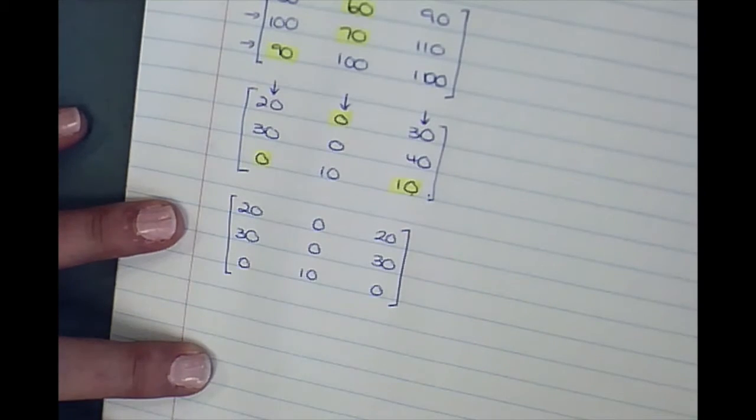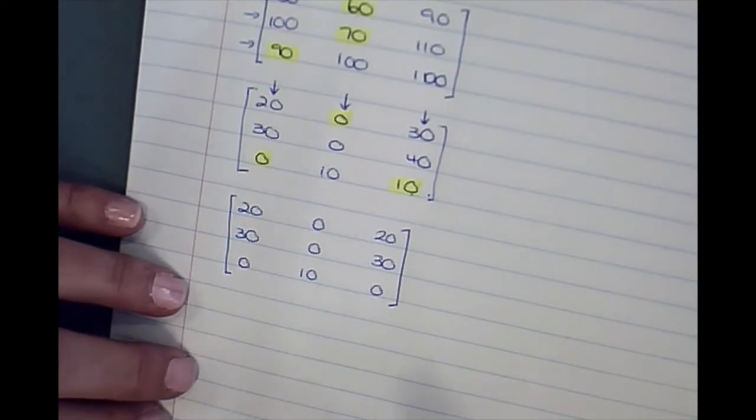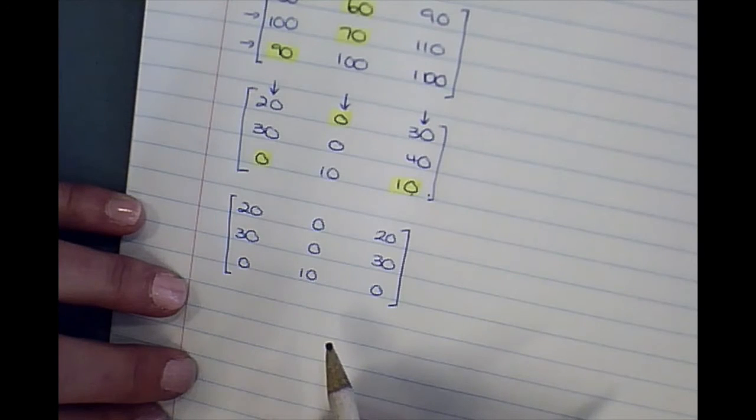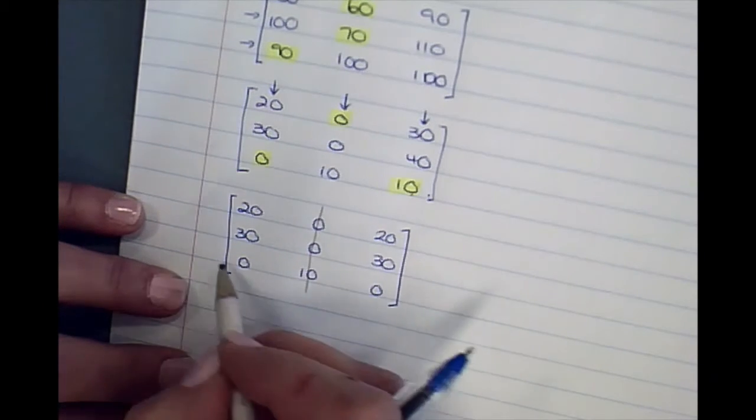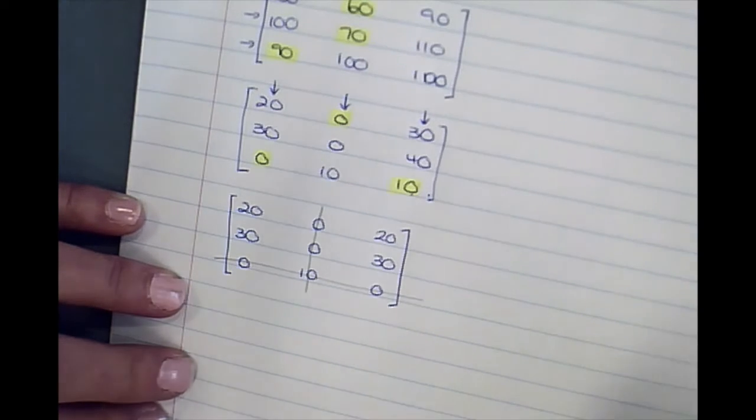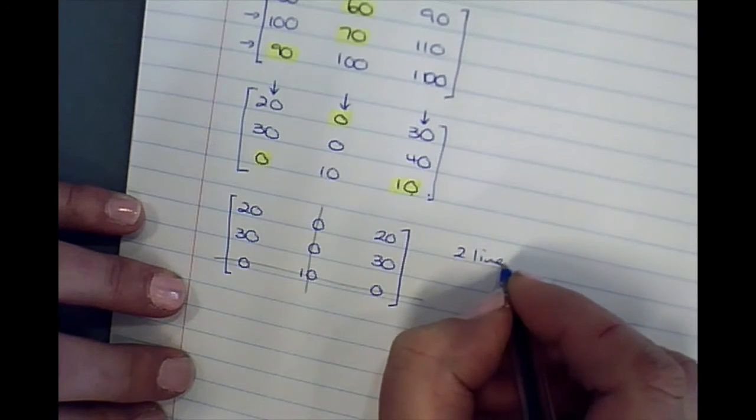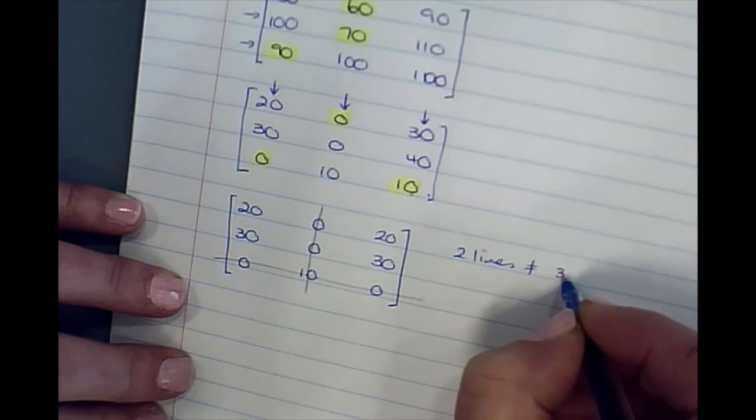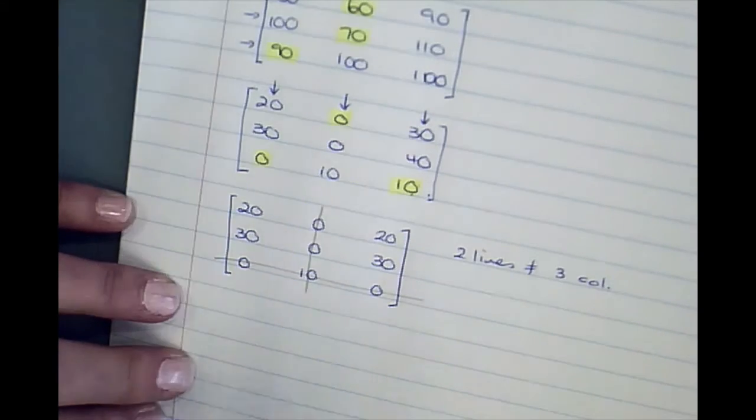We're now going to draw the minimum number of lines through. I think we've got two lines, which doesn't equal three columns, so we have to keep going.